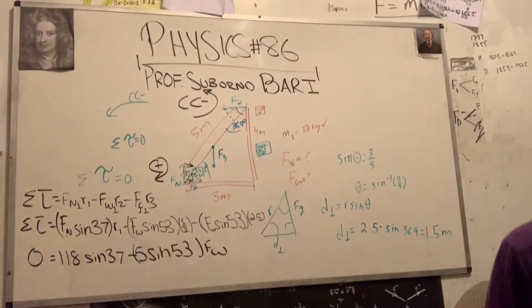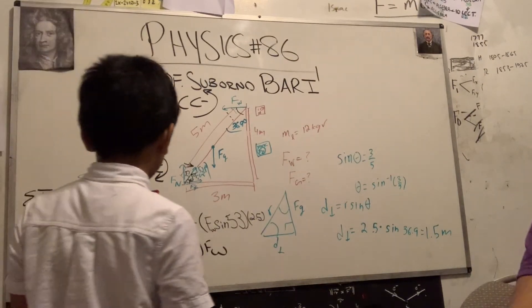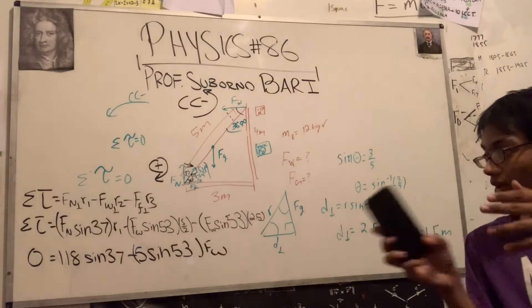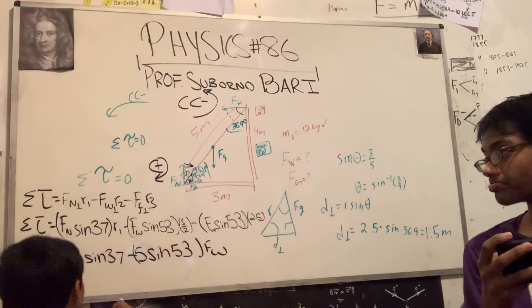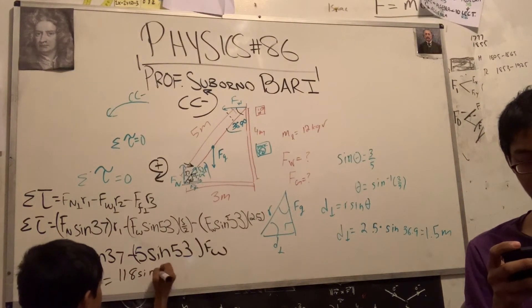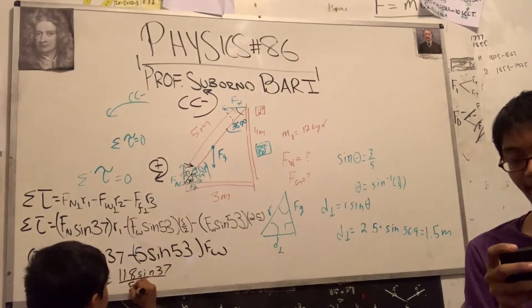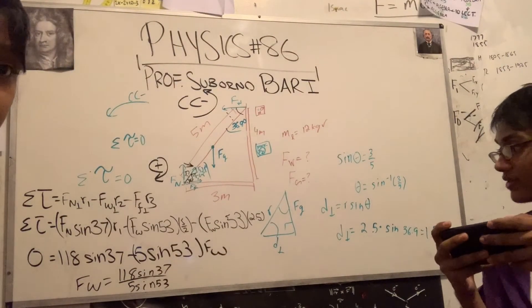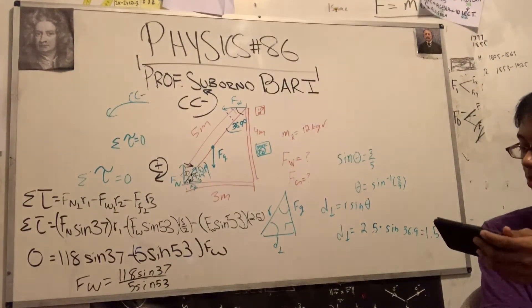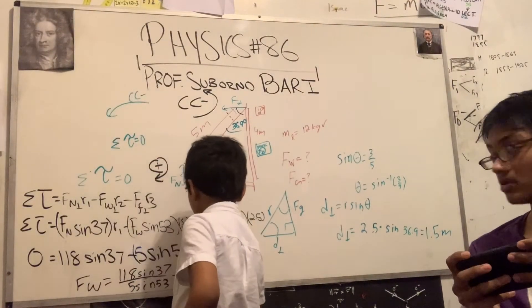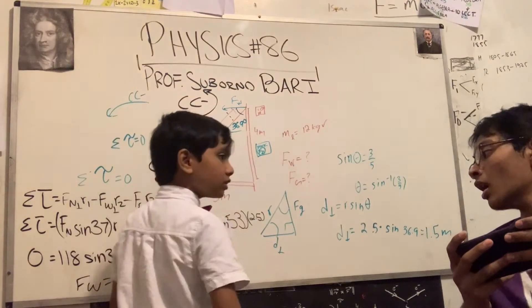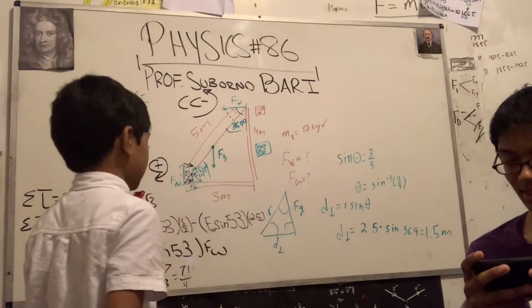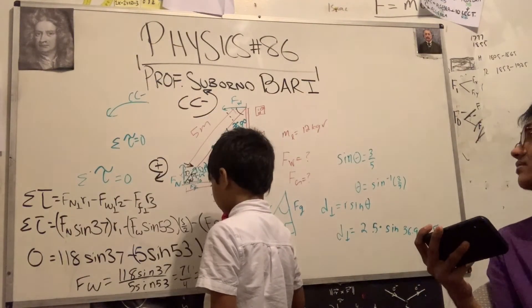Why don't you go ahead and finish it off, professor, for the good people who are watching? Would you like me to calculate this? Actually, you can bring that W to the other side first. So FW should be equal to 118 sine 37 divided by 5 sine 53. On the top it's going to be 71.014 divided by 3.99 or 4, and that gives me 17.75. Is that correct? Nearly.